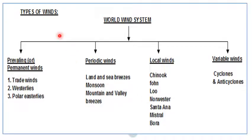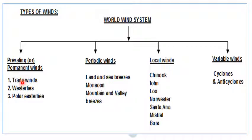Now children, types of winds. First, prevailing winds, also known as permanent winds or planetary winds — these are one and the same thing. The winds which blow constantly in a particular direction are known as prevailing winds because they blow permanently in that particular direction. They blow on the earth, that is a planet, so they are called planetary winds. The three types are trade winds, westerlies, and polar easterlies.